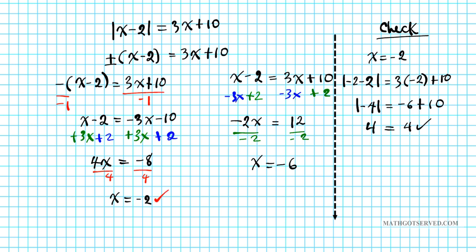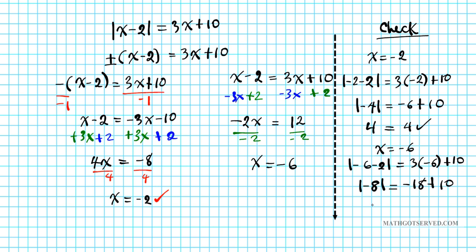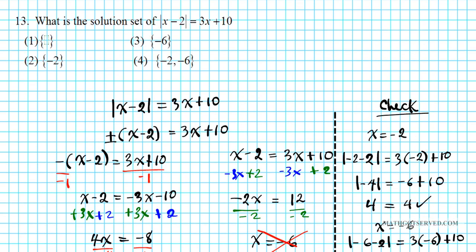Checking x = −6: |−6 − 2| = 3(−6) + 10 → |−8| = −18 + 10 → 8 = −8. This is false, so x = −6 is an extraneous solution. Our answer is option number two.